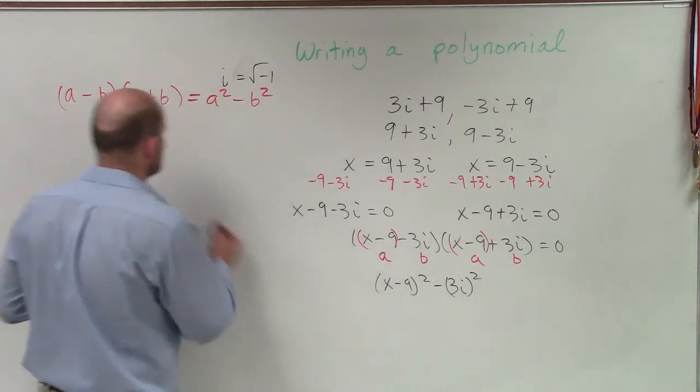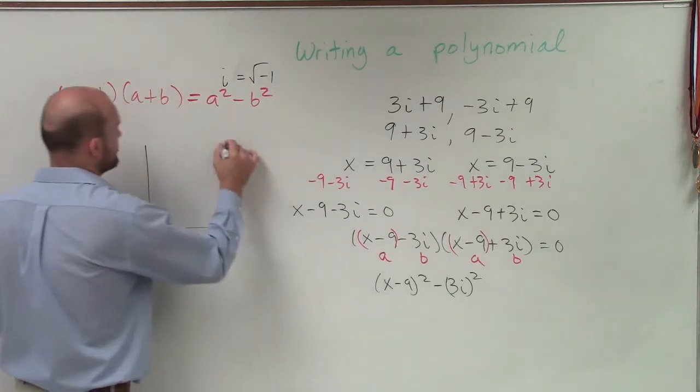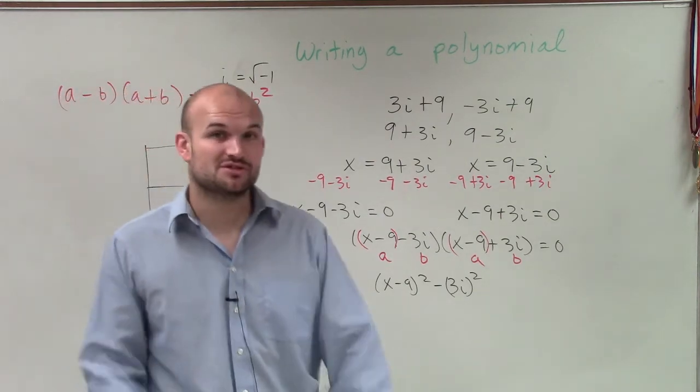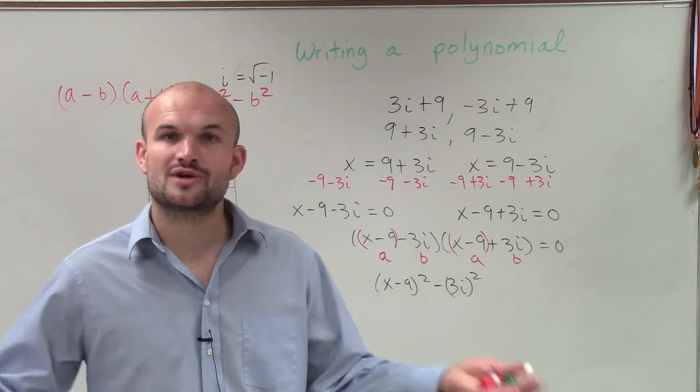Now, we know x minus 9 squared, that's a binomial squared. Now, I'll multiply it out for you. But we should know that a binomial squared represents a perfect square trinomial, right?